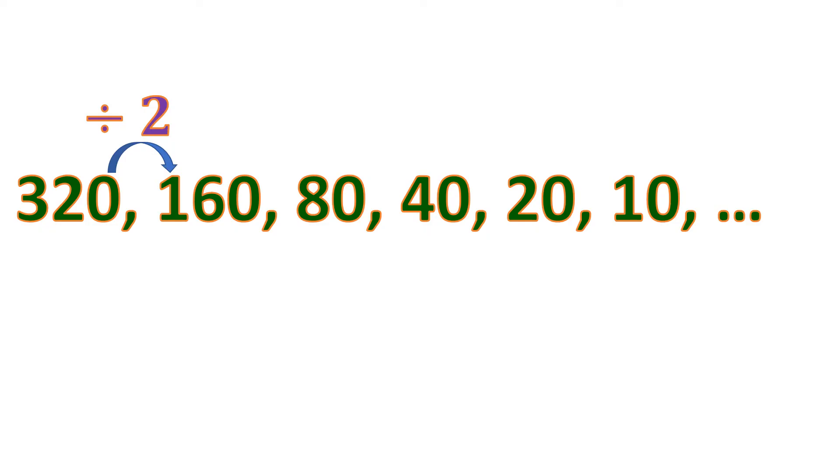For another example, we have a sequence that starts from a big number and gets smaller and smaller rapidly: 320, 160, 80, 40, 20, and 10. So probably it involves the opposite of multiplication, which is division. To get 160 from 320, you need to divide by 2.